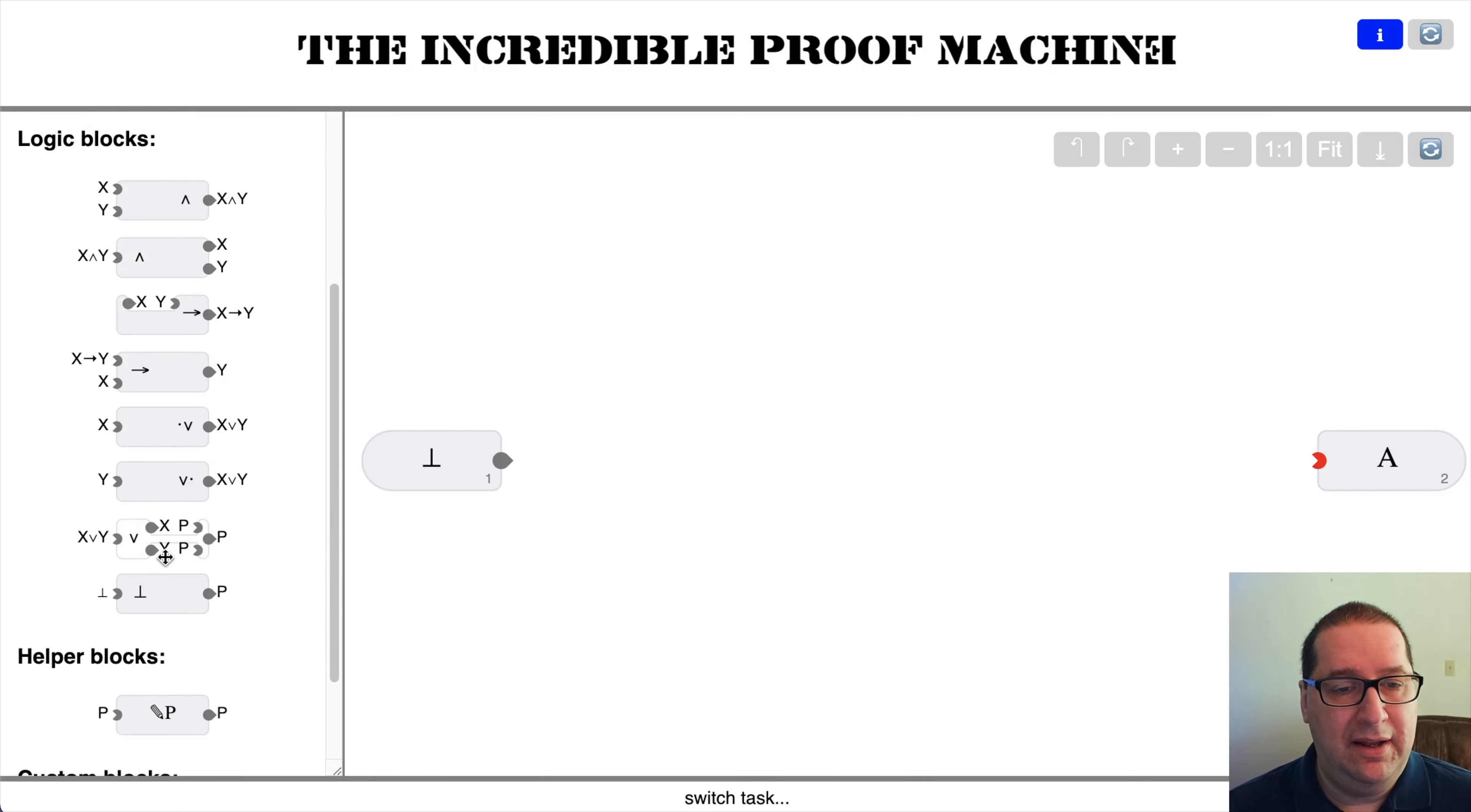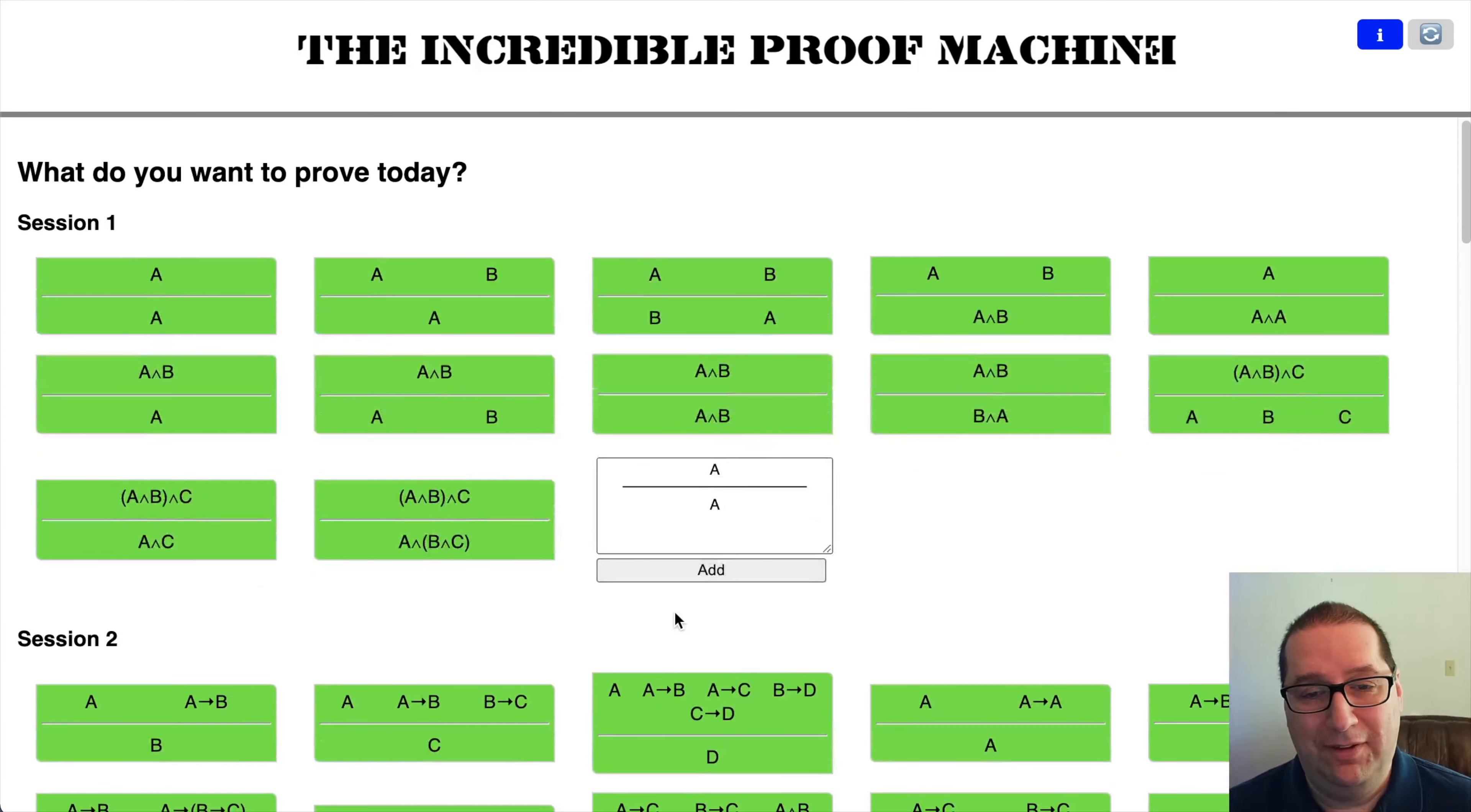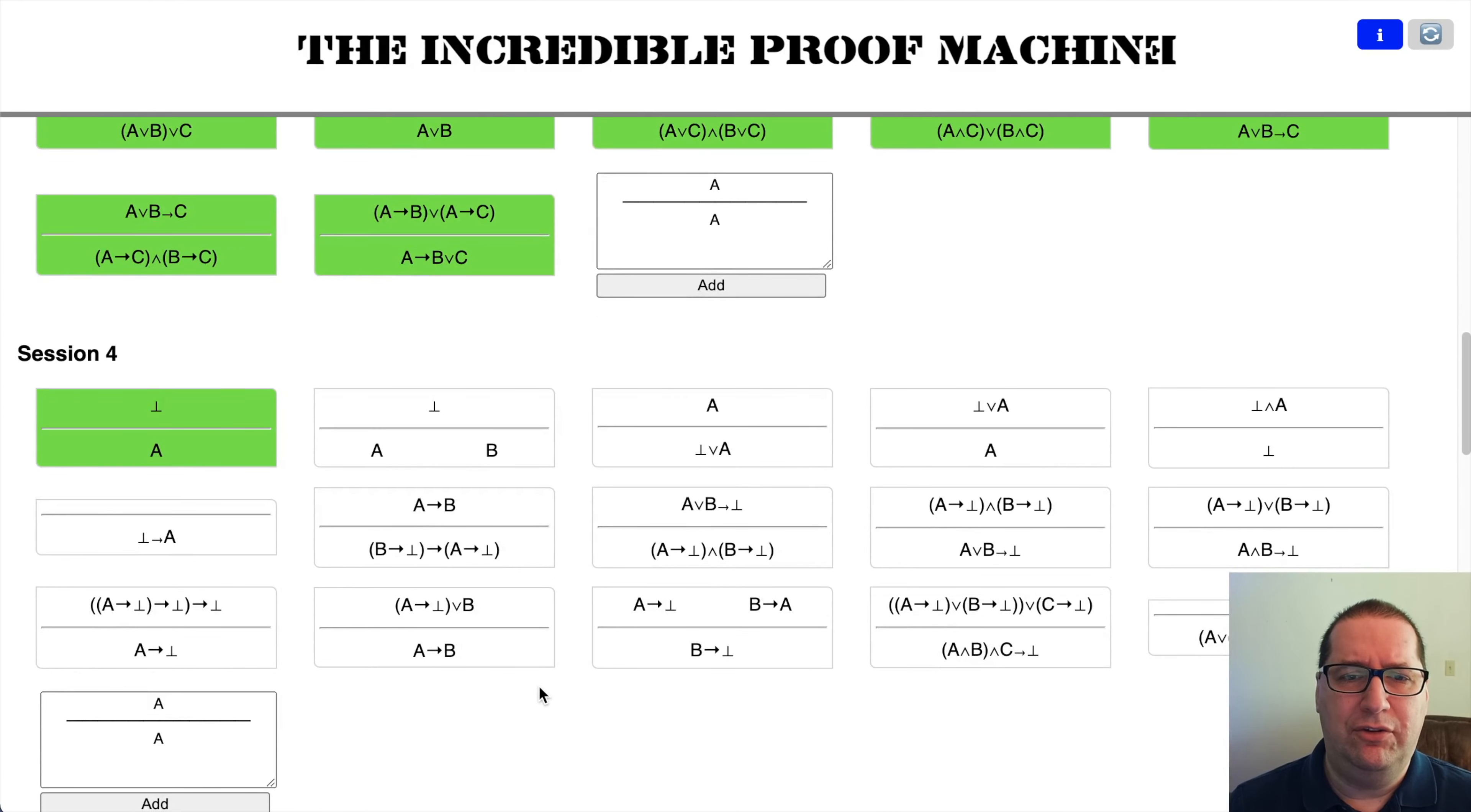And we get a new block here, which the input is false and the output is whatever you want it to be. From falsity, we can prove anything. Wikipedia calls this symbol the uptack, which I think is a terrible name for a symbol. It's also referred to as falsum or absurdum or absurd. If you assume something false, you can prove anything. It's kind of the entire basis of U.S. politics from 2016 through 2020.